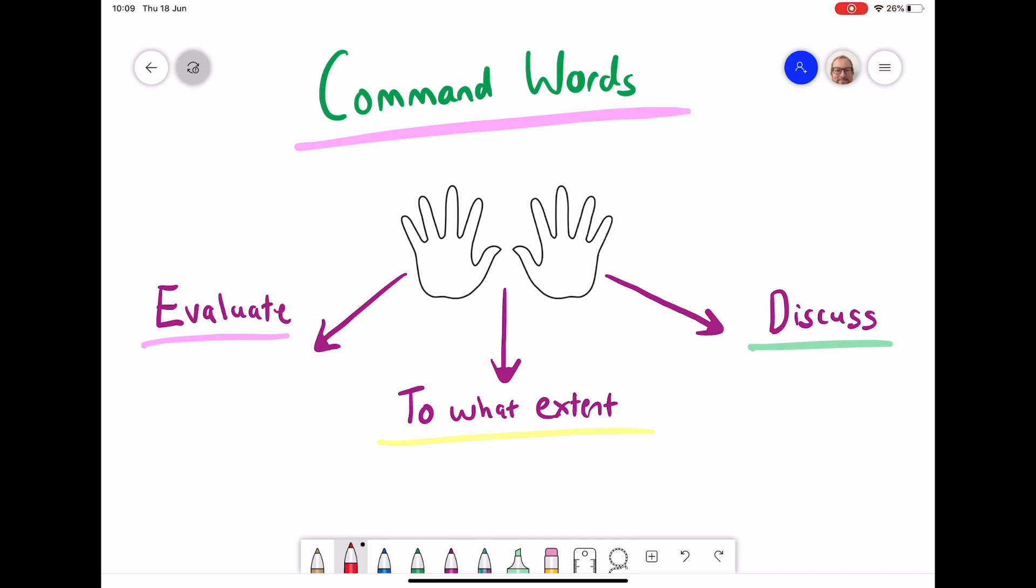So the word evaluate is where we're looking at the strengths and weaknesses of an argument. So the argument could be that intervention is the best way of dealing with failed states, and you would have to look at the strengths of that argument and then you'd have to look at the weaknesses of that argument.